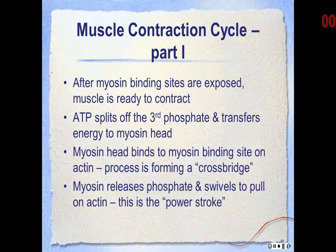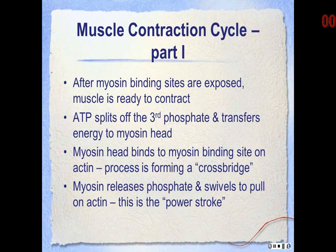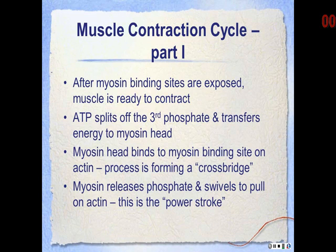The myosin head binds to the myosin binding site on the actin, forming what we call a cross bridge. The cross bridge is simply this attachment point. When the myosin releases the phosphate, it changes shape slightly and swivels to pull on the actin. This is referred to as the power stroke — the actual pulling is the power stroke.